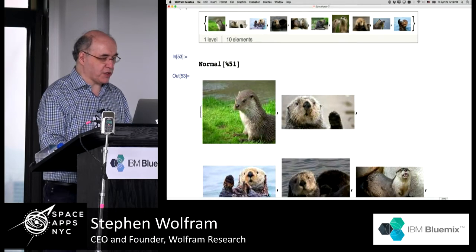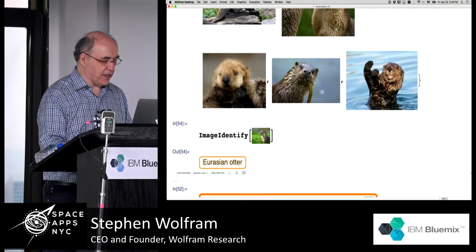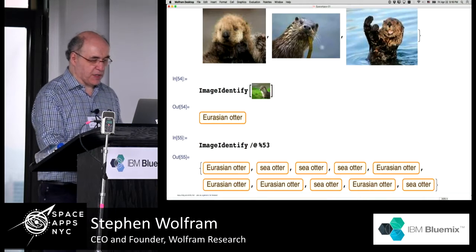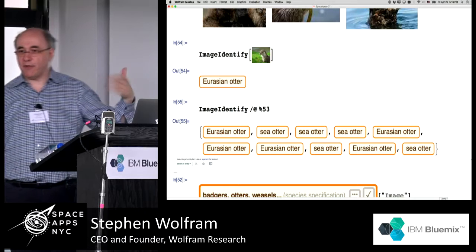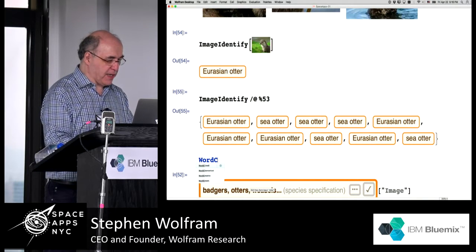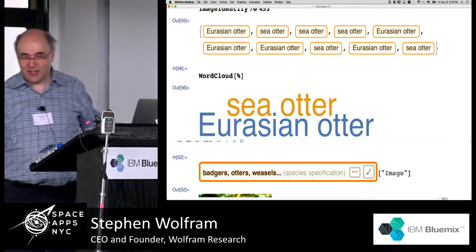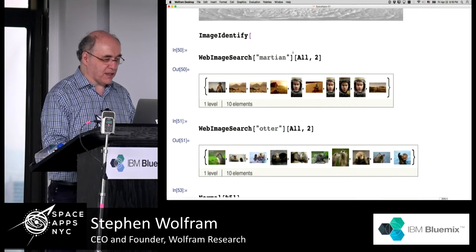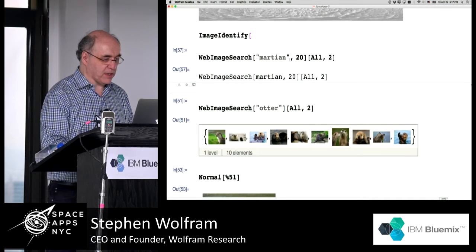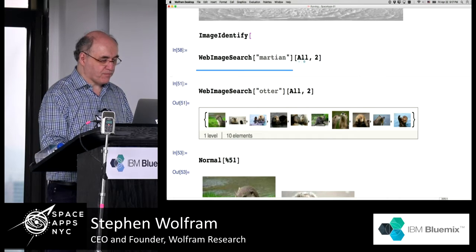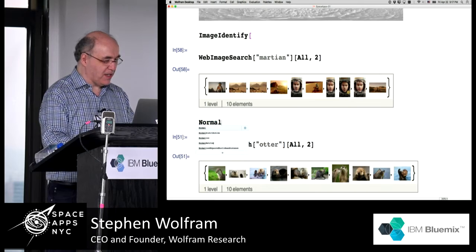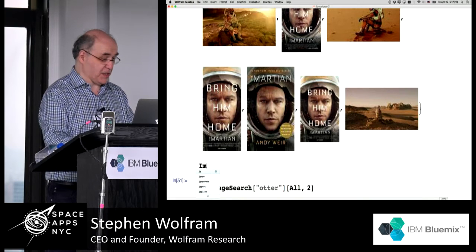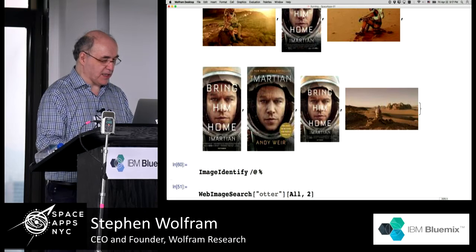Maybe I could make a word cloud of what it says. Let's do something to do with Martians — so this is going to give me pictures of things that are supposed to be Martians. It's mostly the movie. Let's tell it to ImageIdentify those. 'Person, vertebrate, vertebrate' — okay, that's not so bad. Let's actually make it so we can see what it's doing: make a column where the top is the image and then the identification below it. So now everything will be labeled. Person — good. Vertebrate. Not so bad. Person, person, person.